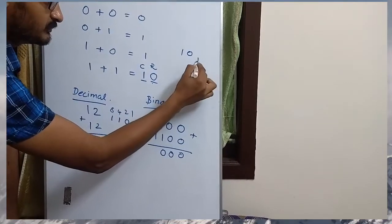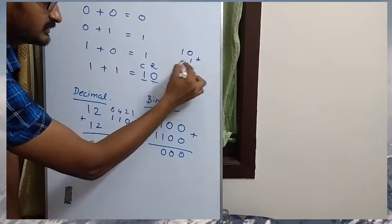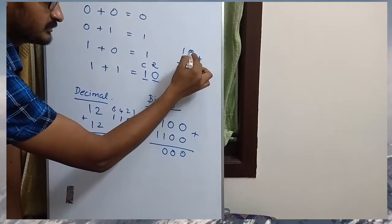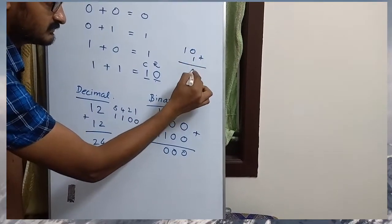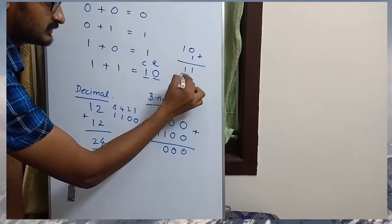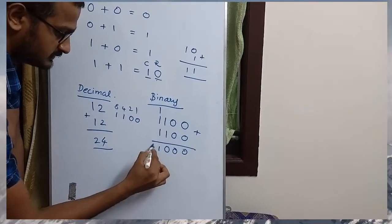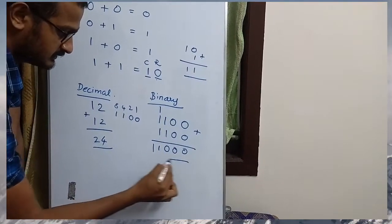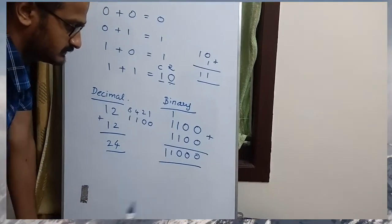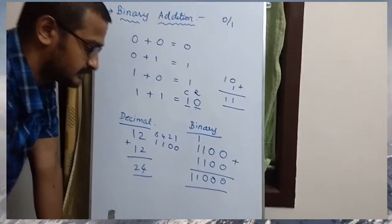So it is 11001. Then 0 plus 1 is 1. So this is the answer.